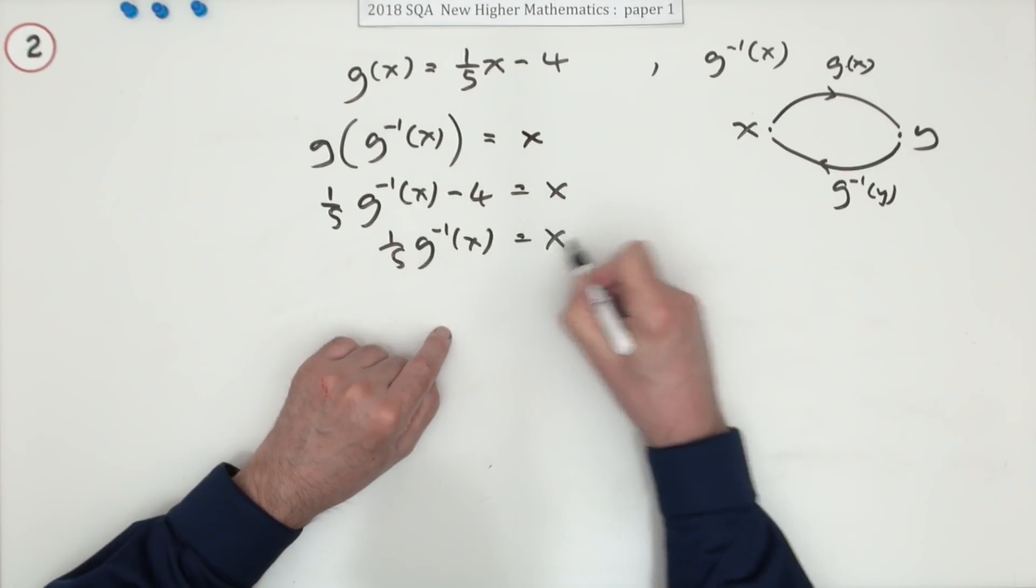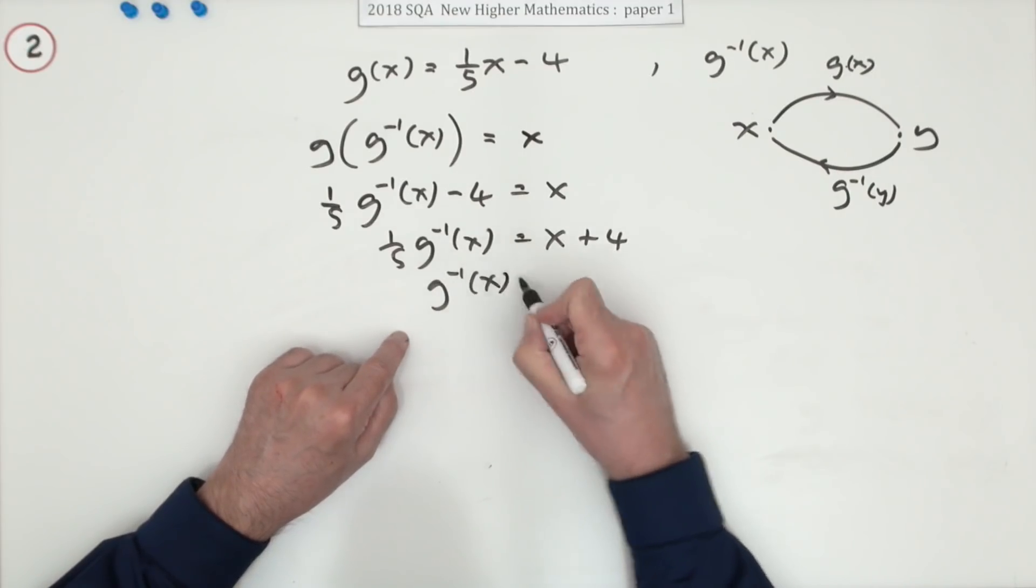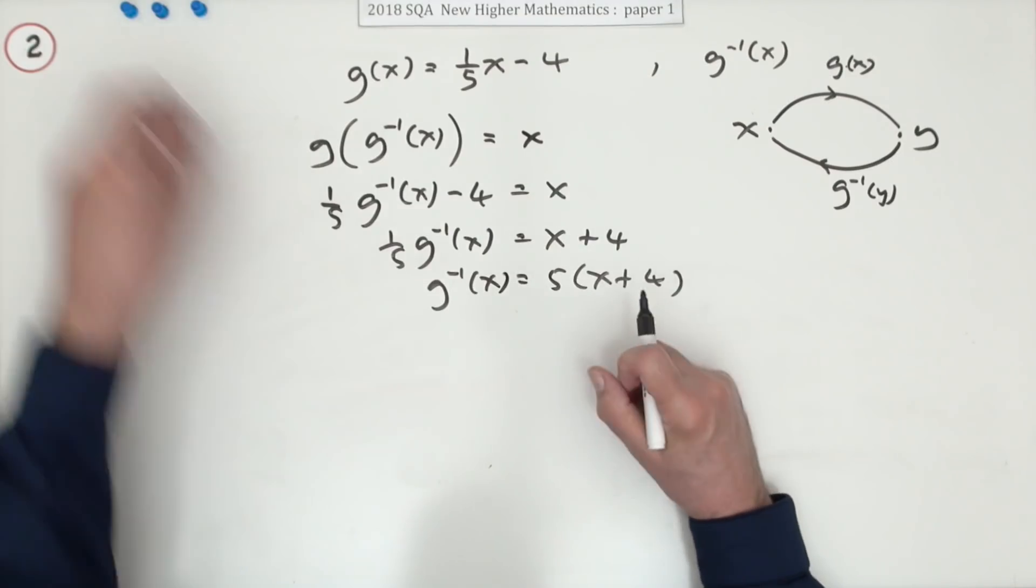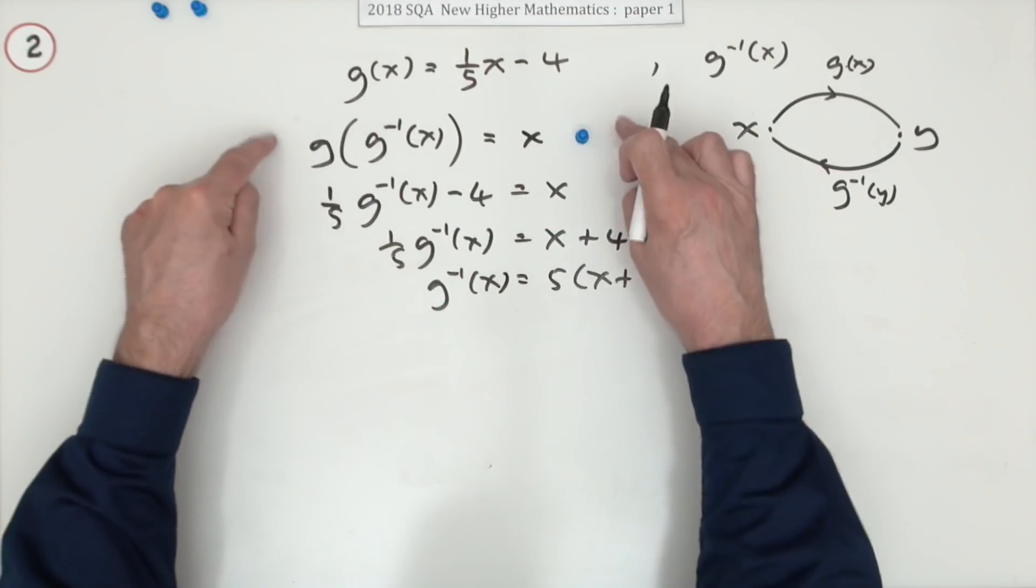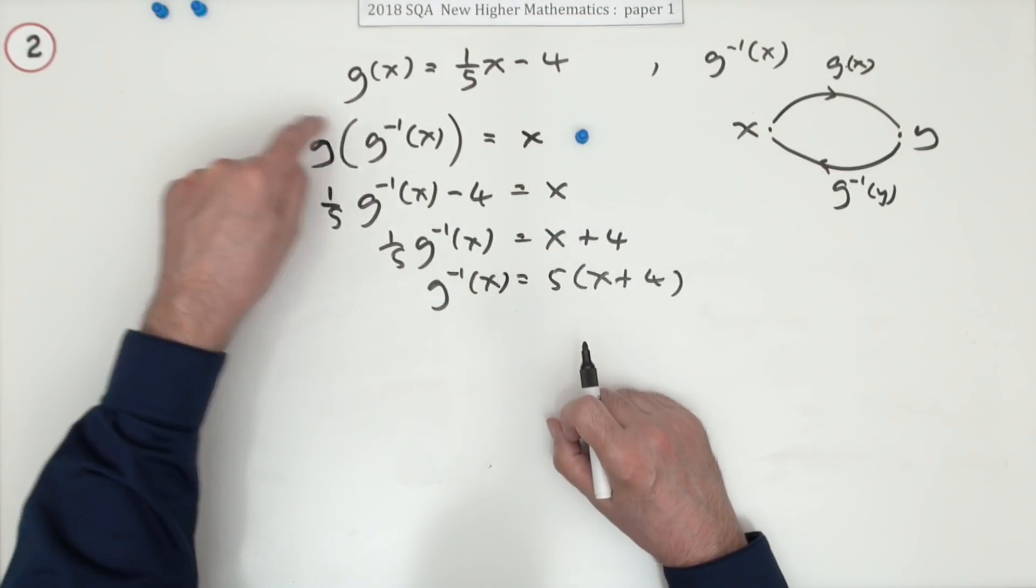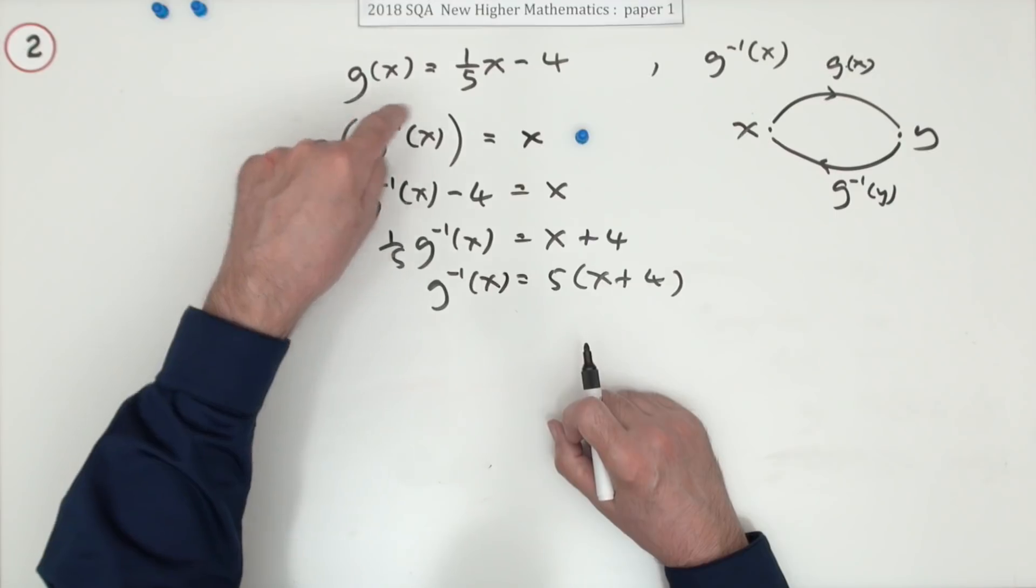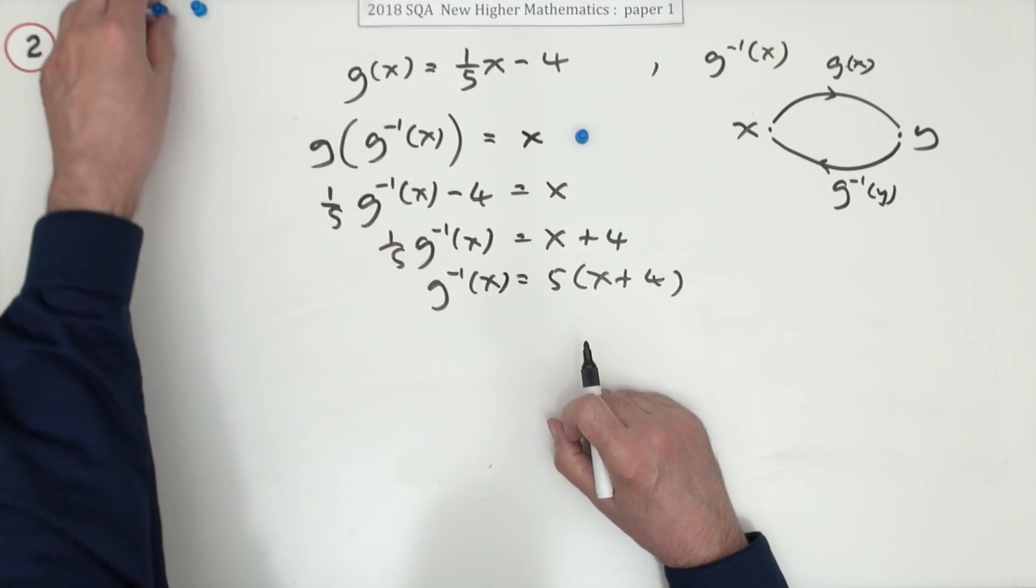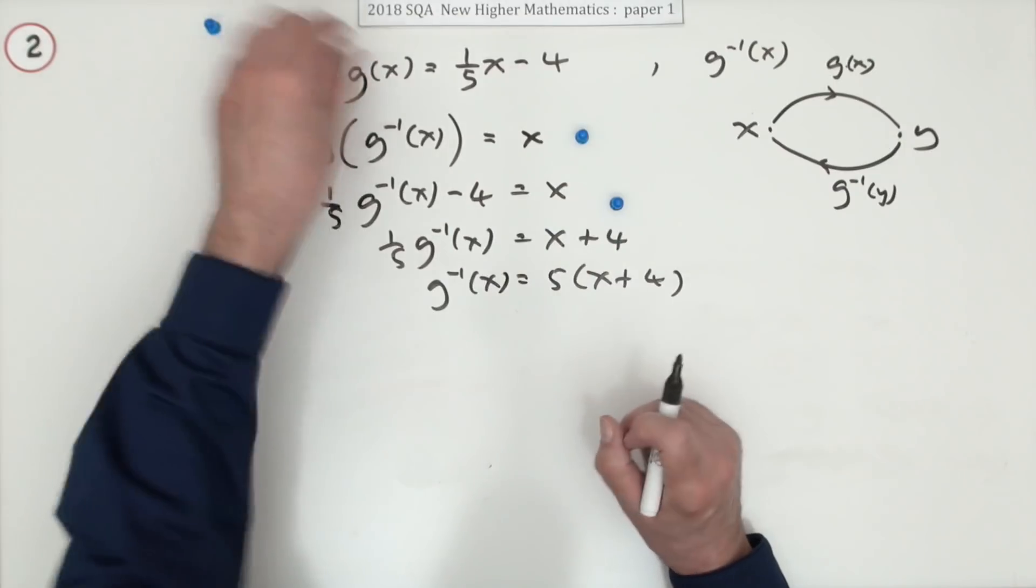So a fifth of the inverse will be x plus four, so the inverse function will be five times x plus four. And the marks are for making this statement here - this important one, the function acting on the inverse undoes it all and gives you back the original number - then rearranging it to the final answer.